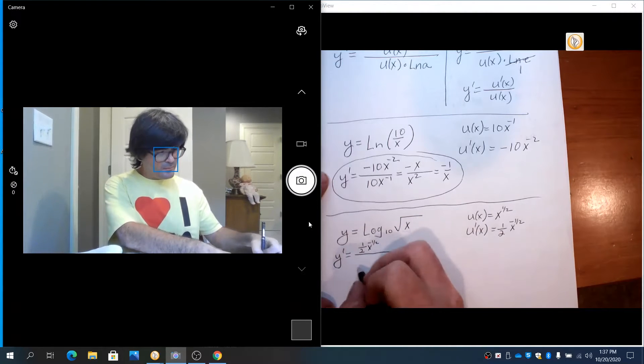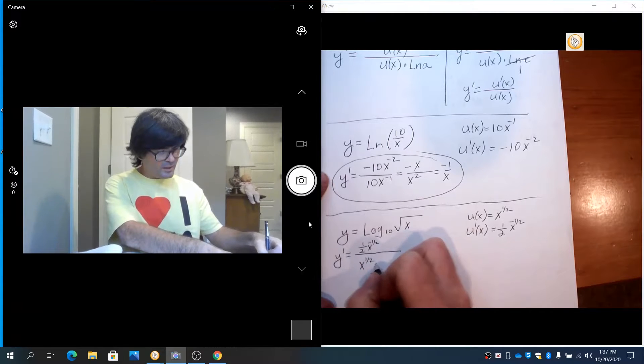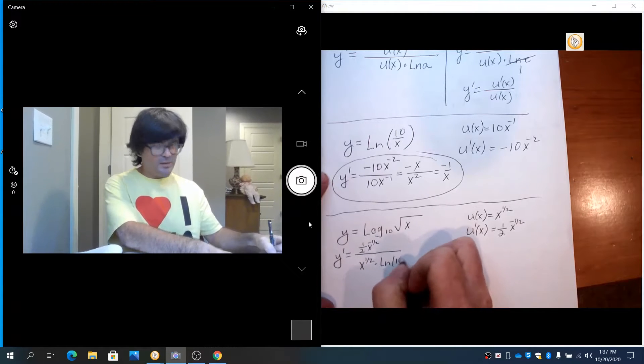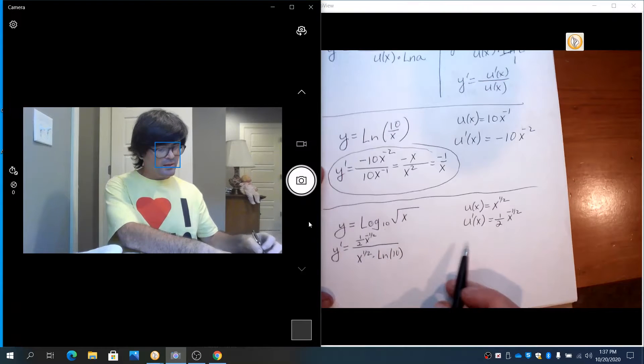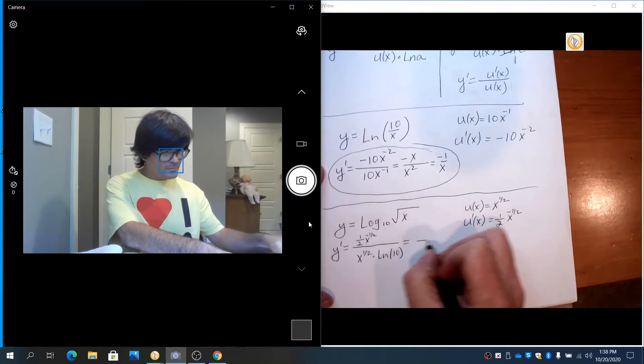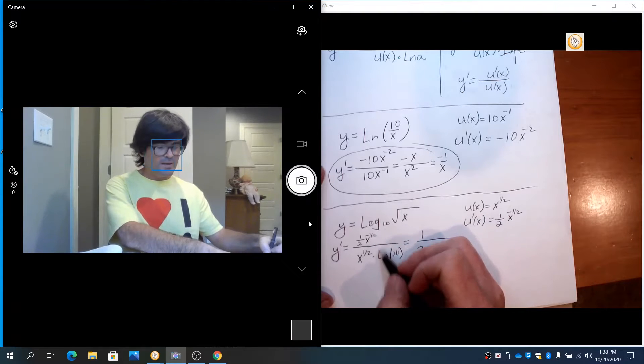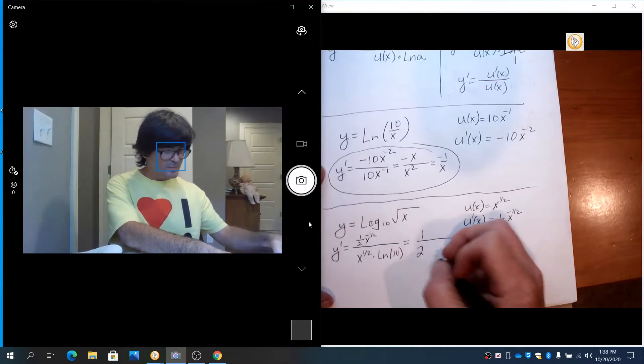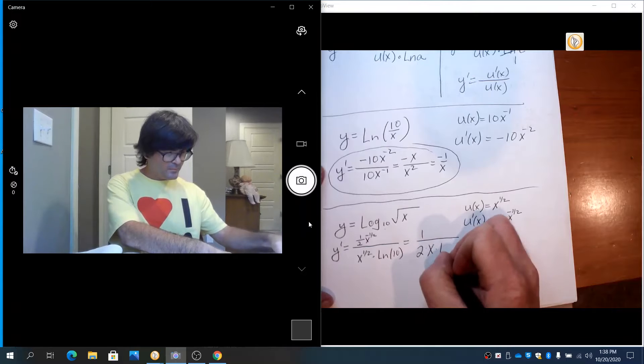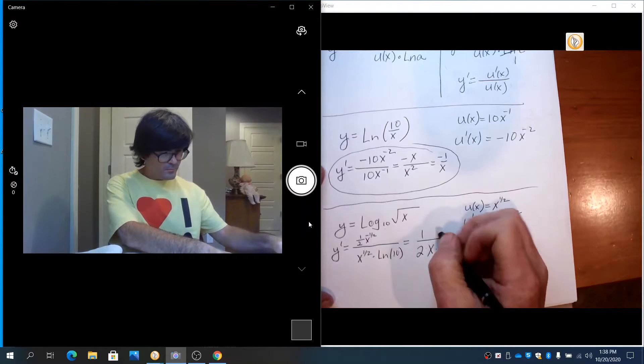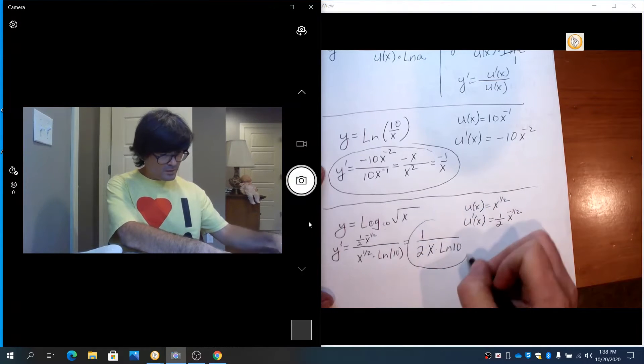And then natural log of 10 on bottom as well, because the base is 10. And I'm going to clean this up. So I have 1 half. x to the negative 1 half can come down and combine with that x to the 1 half and just be x. So that's that.